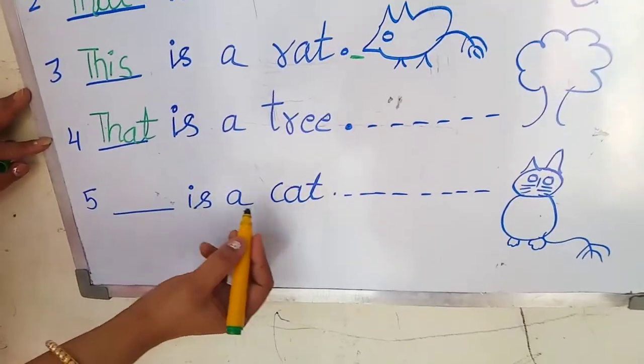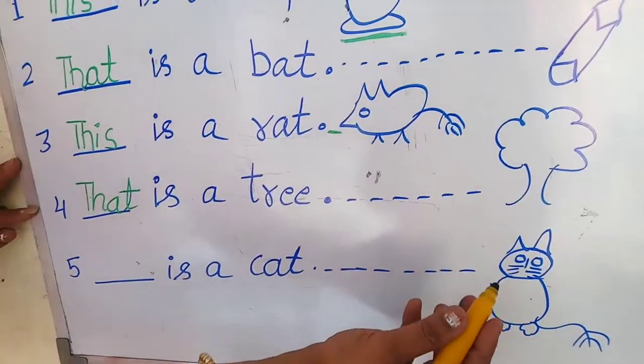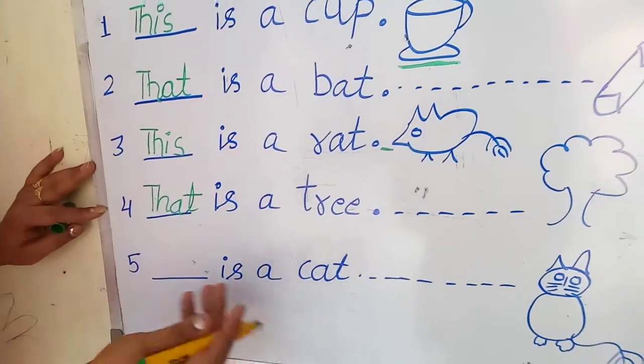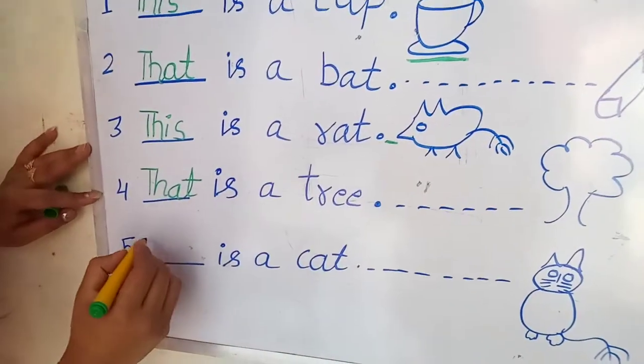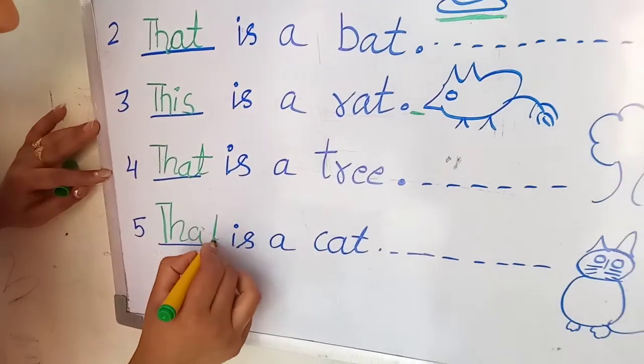And the next is dash is a cat. Cat is so far away, so write down this. No, far away. So that. Yes, that. So write down that.